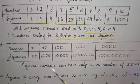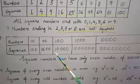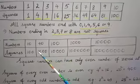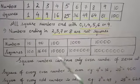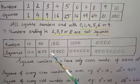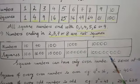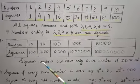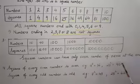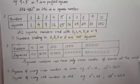So, you can see that the square numbers are having even number of zeros. Here, you have 2 zeros, 2 zeros, then 4 zeros, 6 zeros and 8 zeros. So, square numbers can have only even number of zeros at the end.